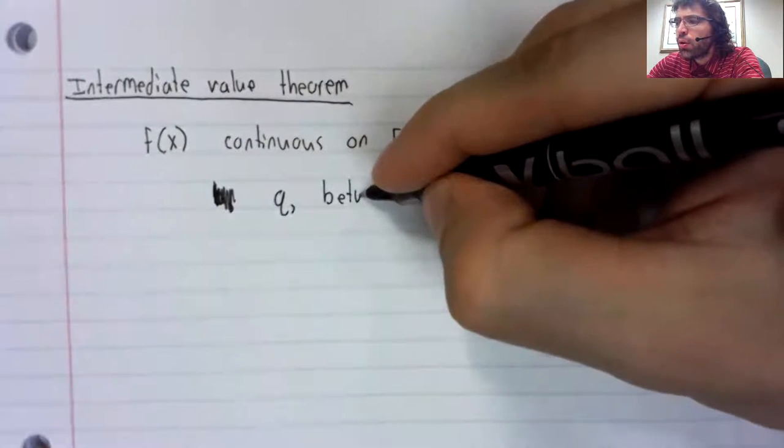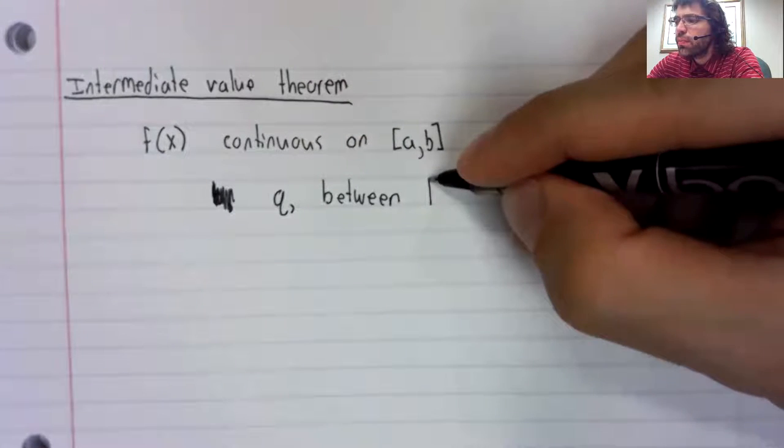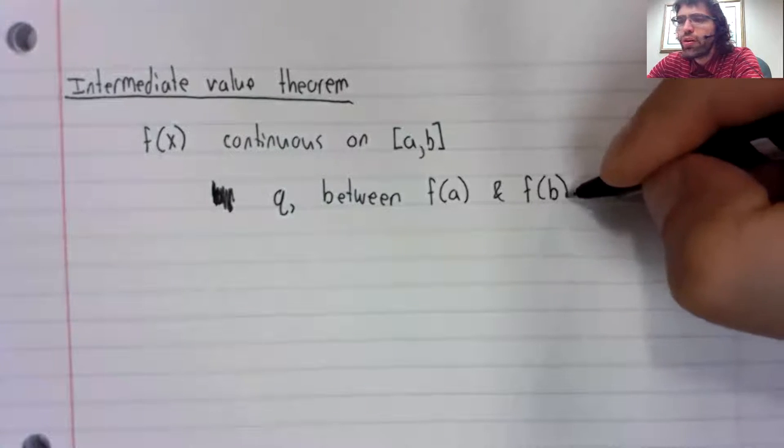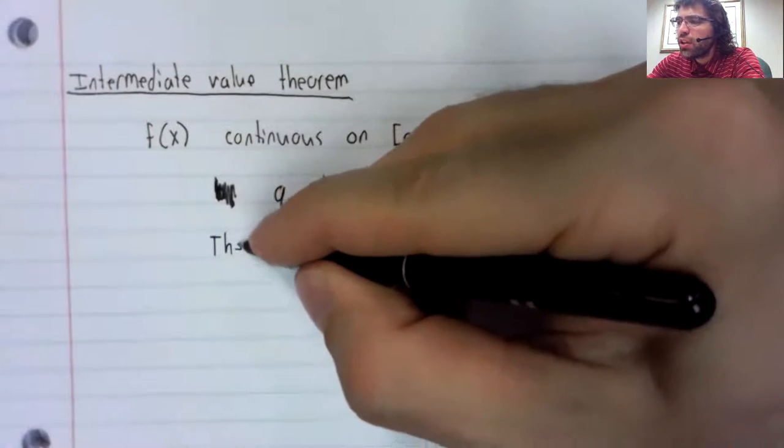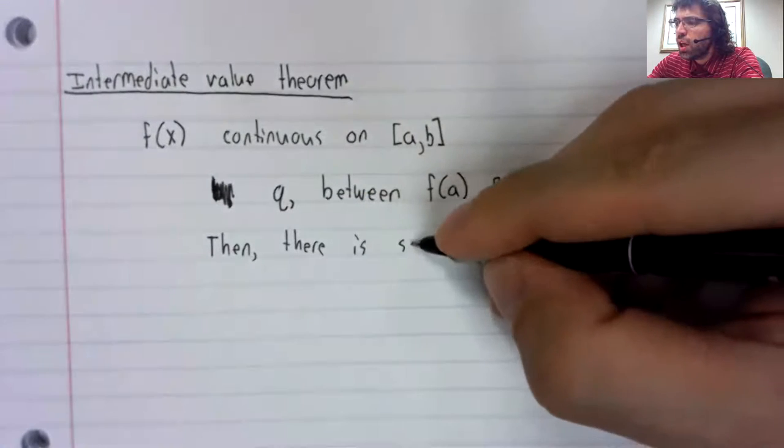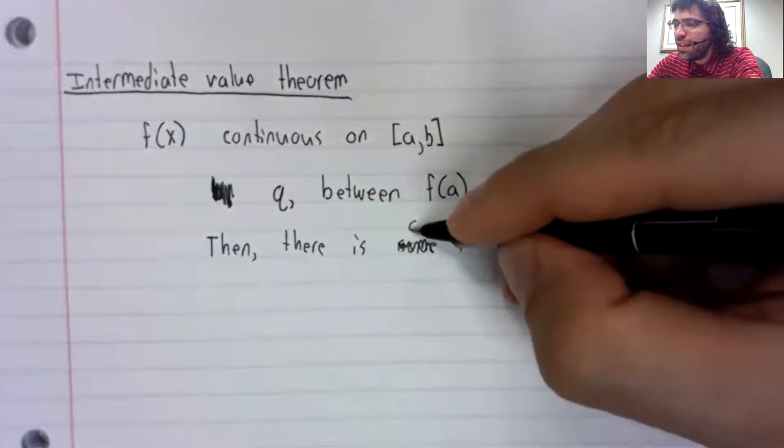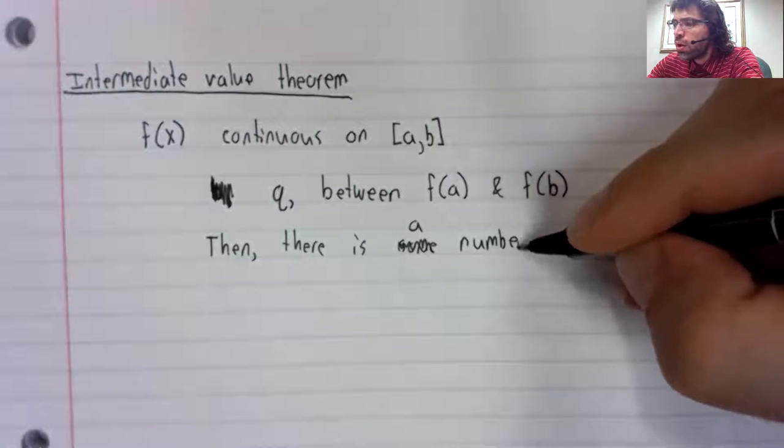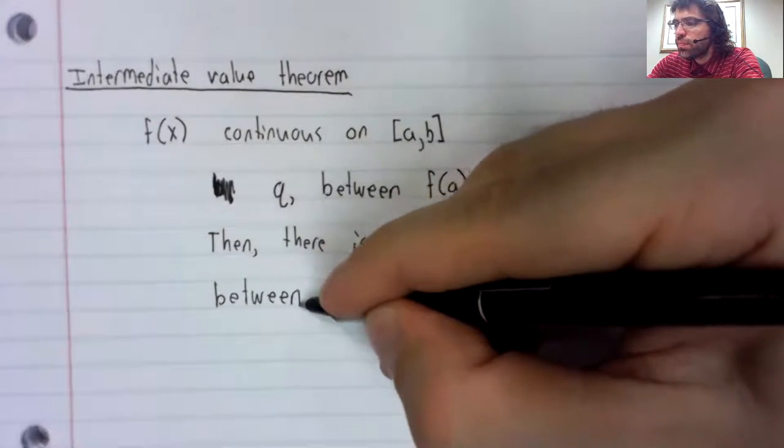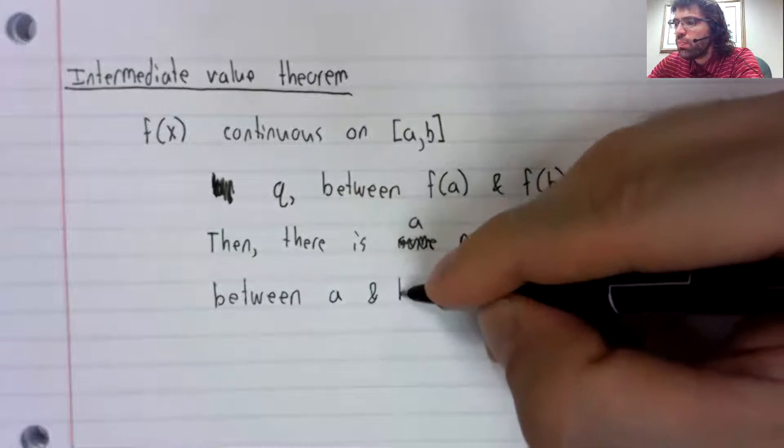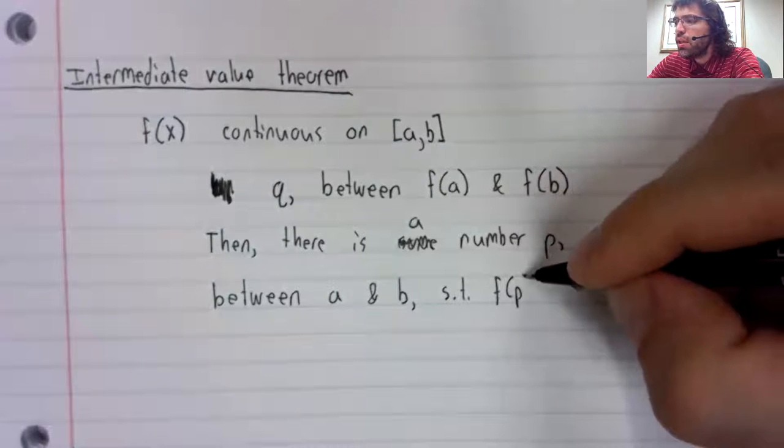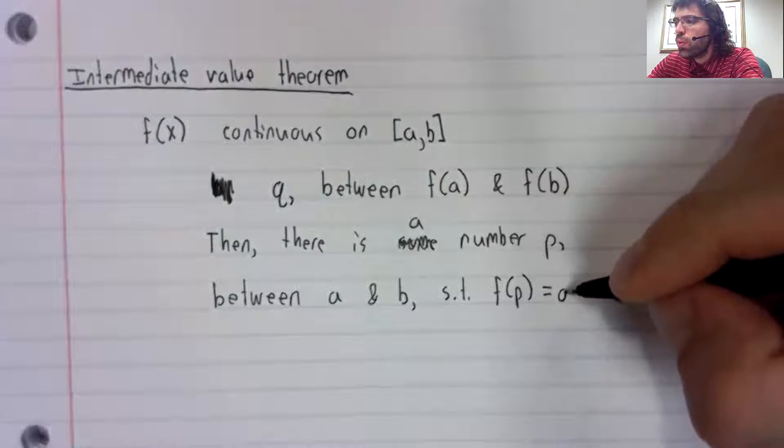And that number is between f of a and f of b. Then there is a number p between a and b, such that f of p equals q.